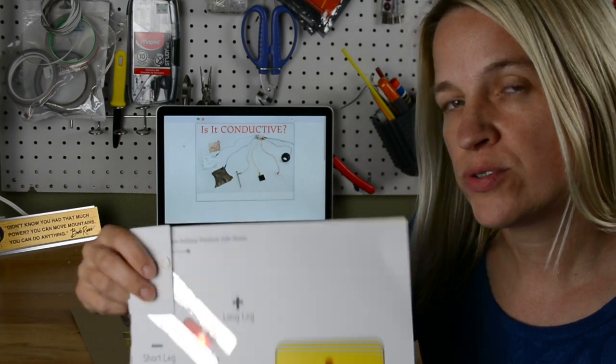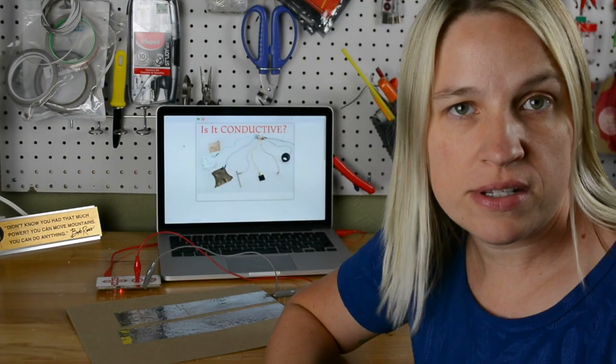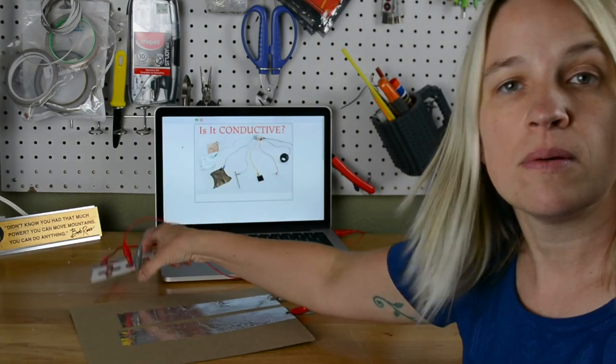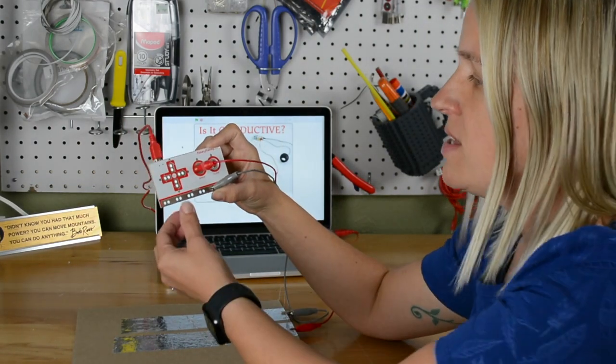Now that you've made your own foil circuit, it's time to start testing conductive items. It's really easy to test conductive items with Makey Makey because Makey Makey works on resistive sensing.